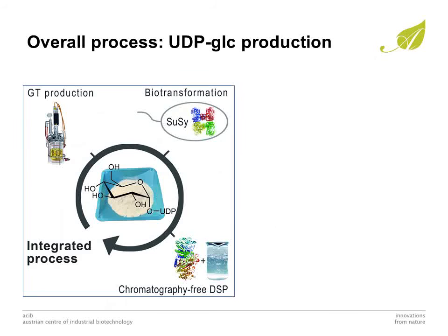Overall, the established process would allow the production of 0.7 kg of UDP-Glucose from 1 liter of E. coli bioreactor culture. The success of this holistic approach might support the development of Leloir glycosyl transferases into industrial biocatalysts.